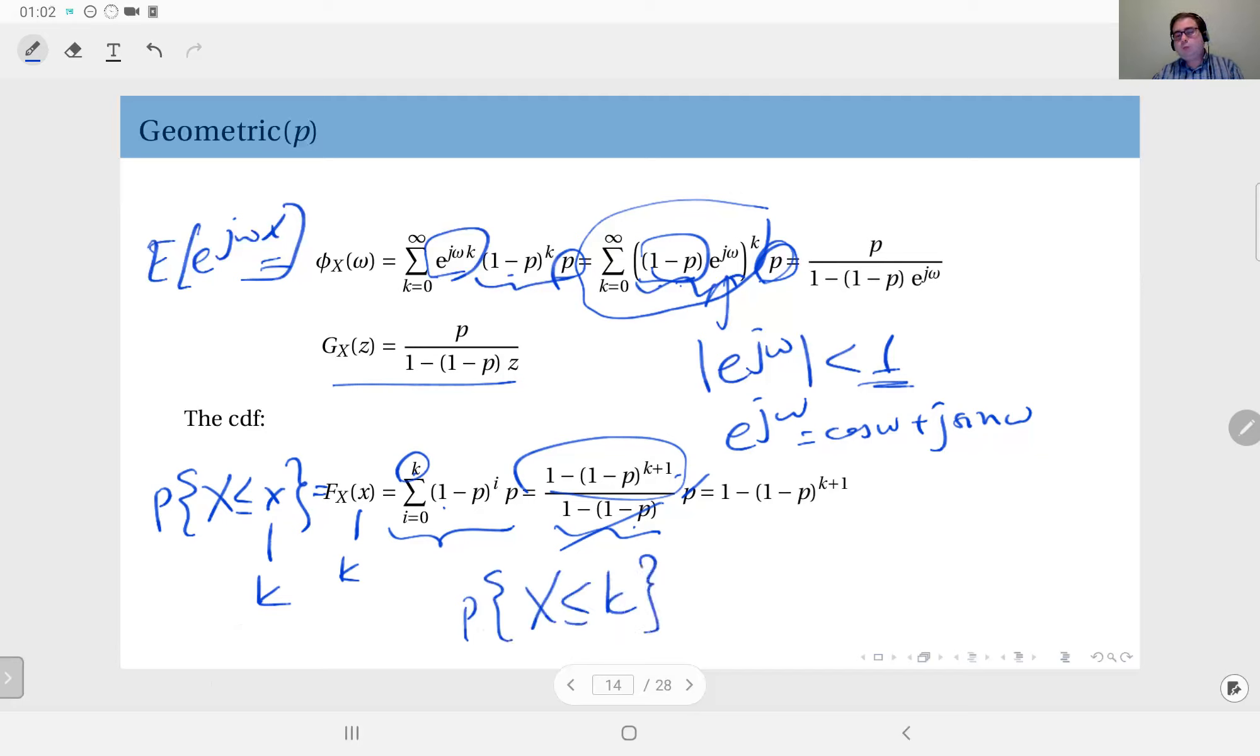Remember what X represents here, the geometric random variable. It's the number of fails before I see the first success. If you say that X is less than or equal to k, how can I find the probability for this event? That means the first success I see occurs within the first k trials.